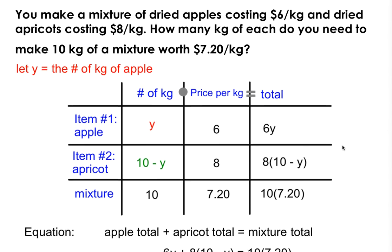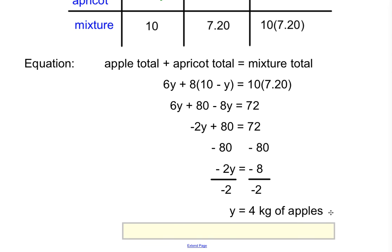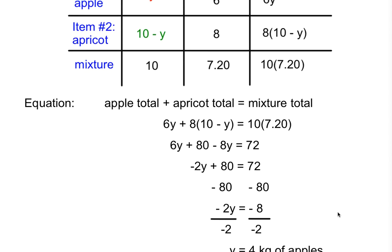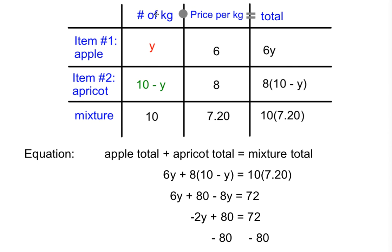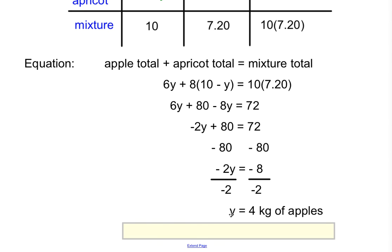So I need to go back and figure out how many kilograms of apricots I used. And simply go back to your table, the number of kilograms for apricots is 10 minus Y. Since I already know what Y is, just 10 minus 4 gives you 6 kilograms of apricots. I hope that helped.